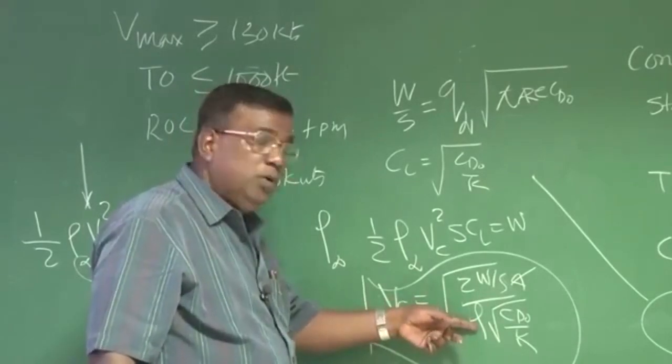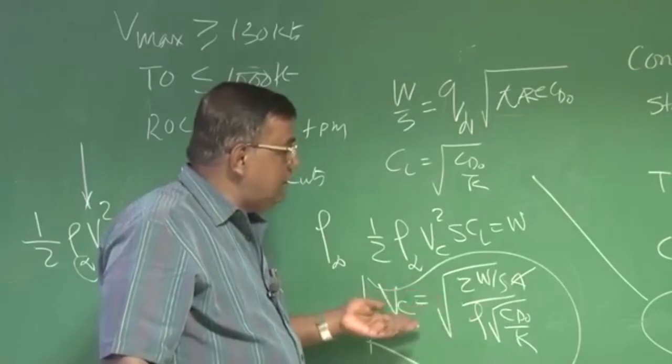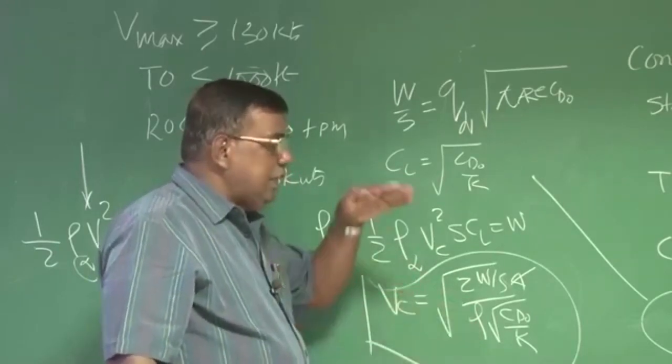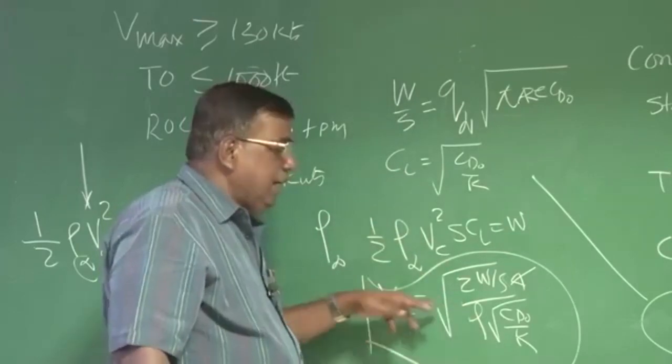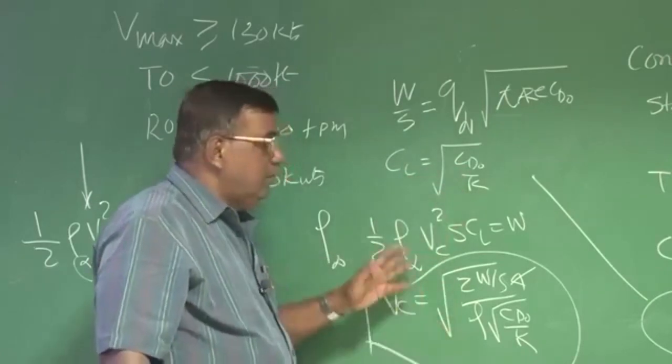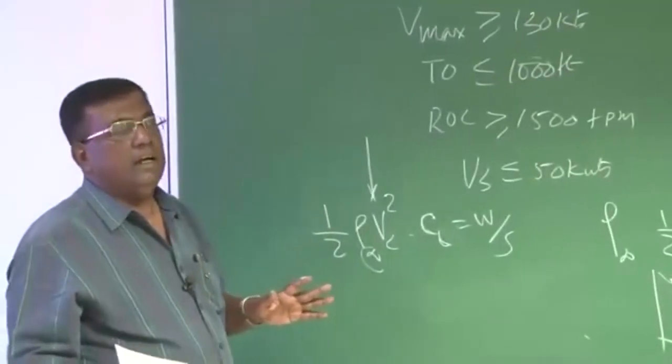You can see that if I reduce rho, cruise speed will increase. So I can always do that sort of iteration that okay, I pick up an altitude when I get a higher cruise speed to maintain lift equal to weight, flying at CL equal to CD0 by K. We satisfy my customer also, it is not that too slow an aircraft.